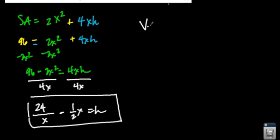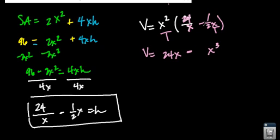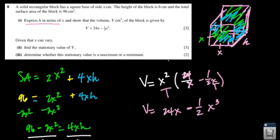The volume equals the area of the base, which is x squared, times the height. Substituting what we found for h: V = x² × (24/x − x/2). Distributing gives V = 24x − x³/2.